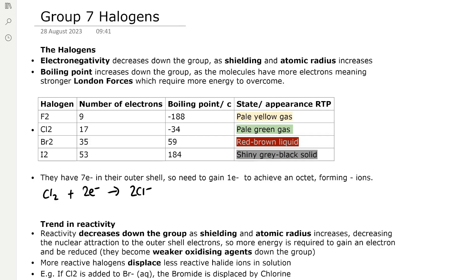You can see a table laying out the halogens, the number of electrons, the boiling point, and the state and appearance at room temperature and pressure. Fluorine has nine electrons per molecule and a boiling point of minus 188 degrees Celsius, while iodine has 53 electrons and a boiling point of positive 184 degrees Celsius. As electrons increase, there's a trend of increasing boiling point.